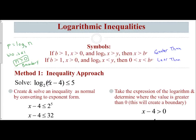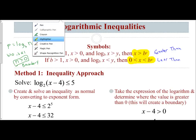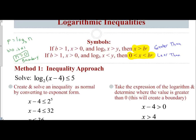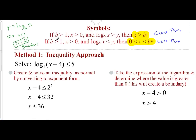If I have log base 2 of the quantity x minus 4 is less than or equal to 5, we solve the inequality by converting to exponential form. We take the expression x minus 4 and set it less than or equal to our base 2 to the 5th power. So x minus 4 is less than or equal to 32. Adding 4 to both sides gives x is less than or equal to 36.